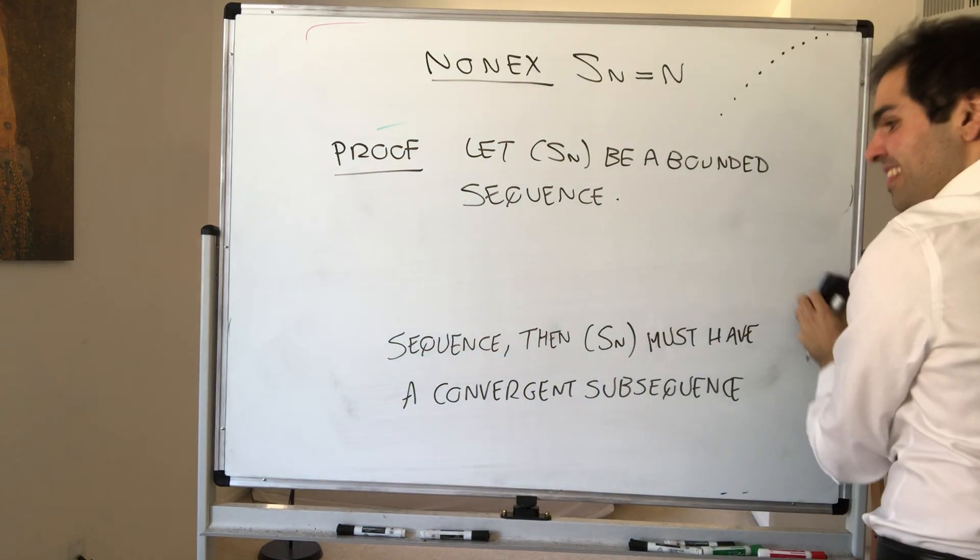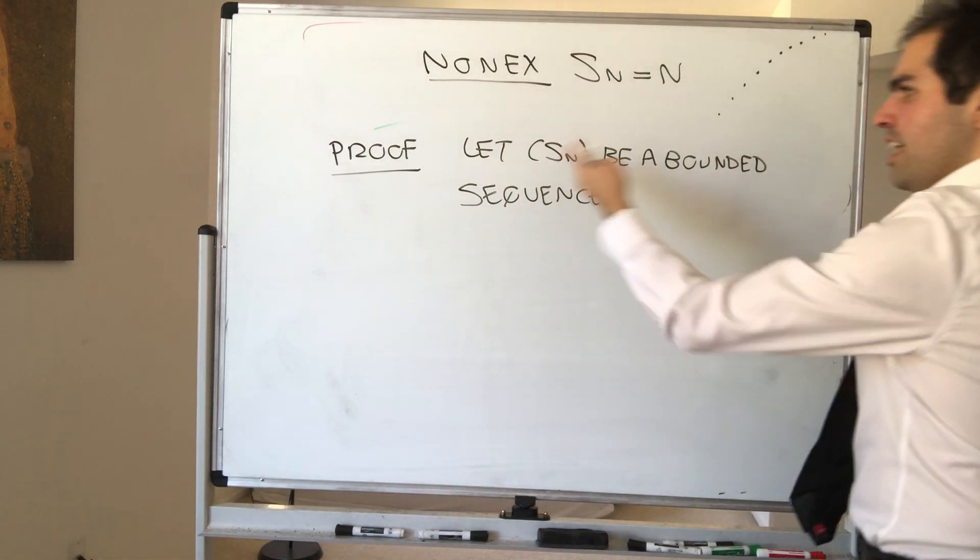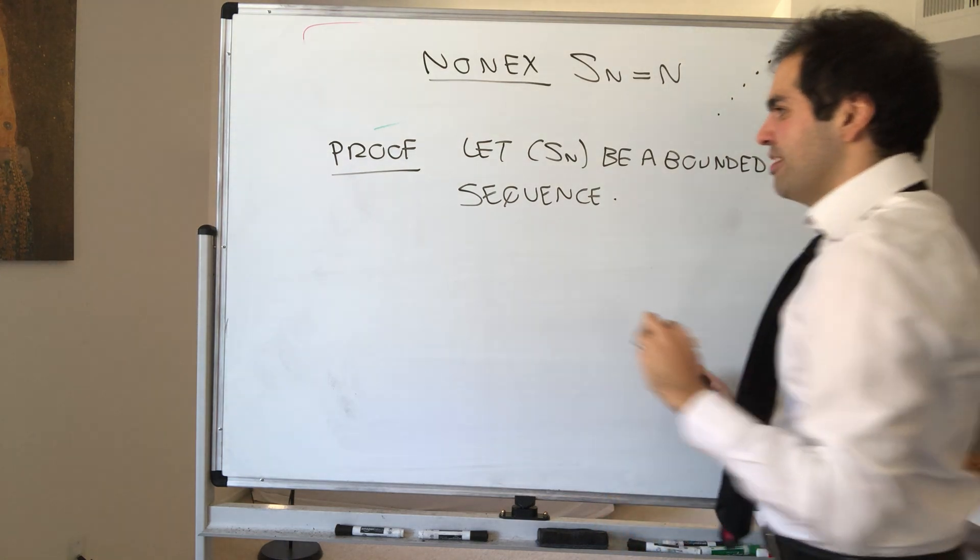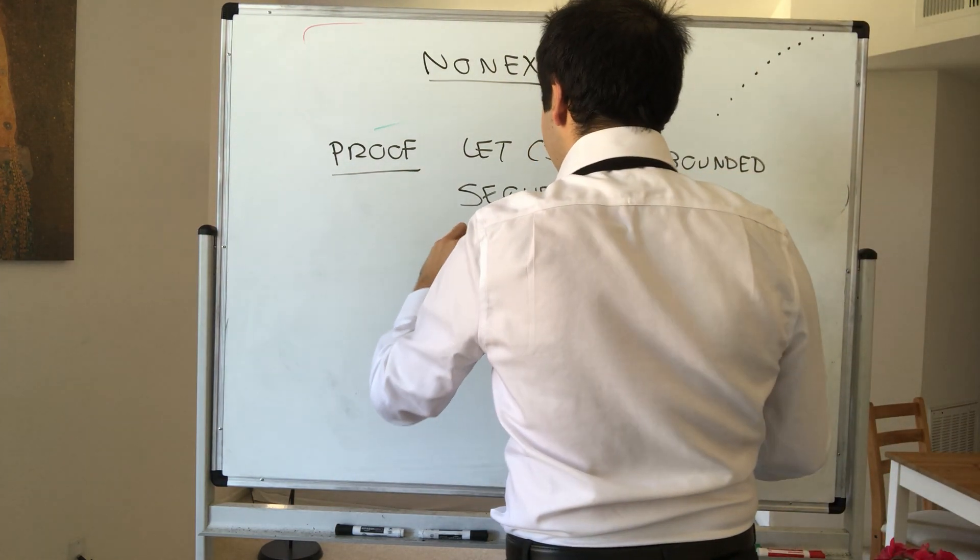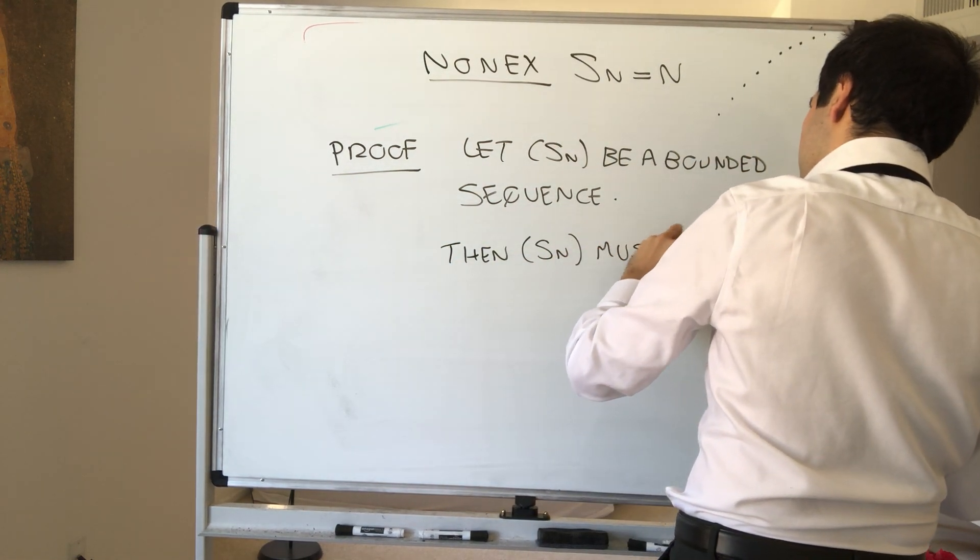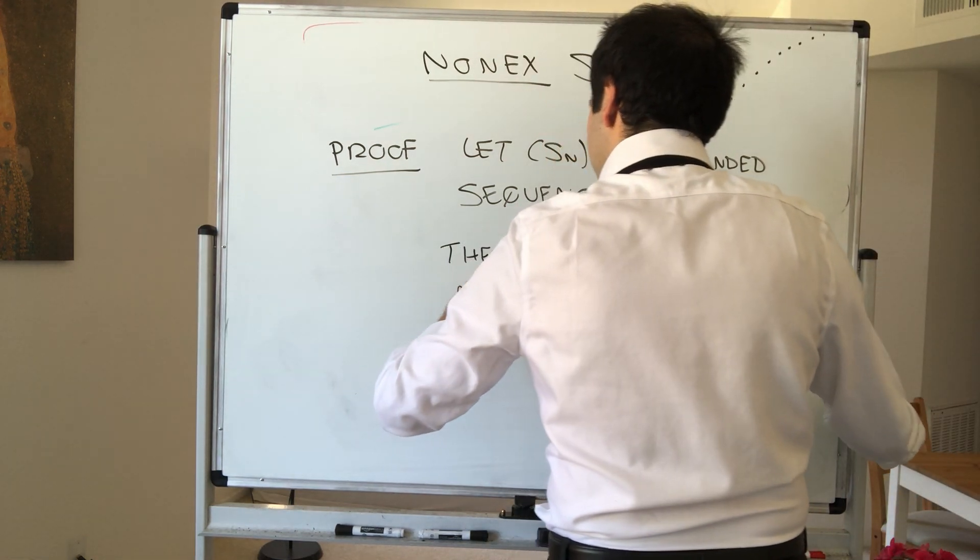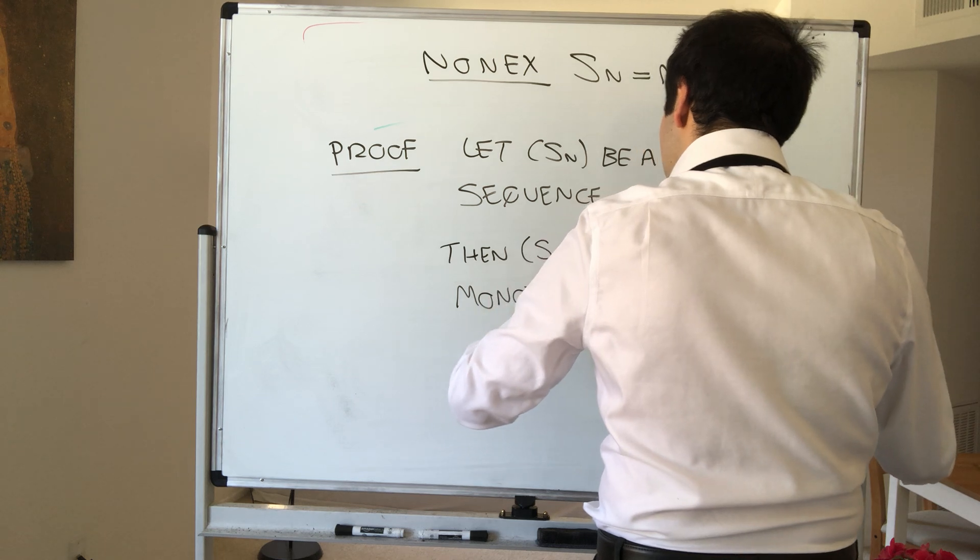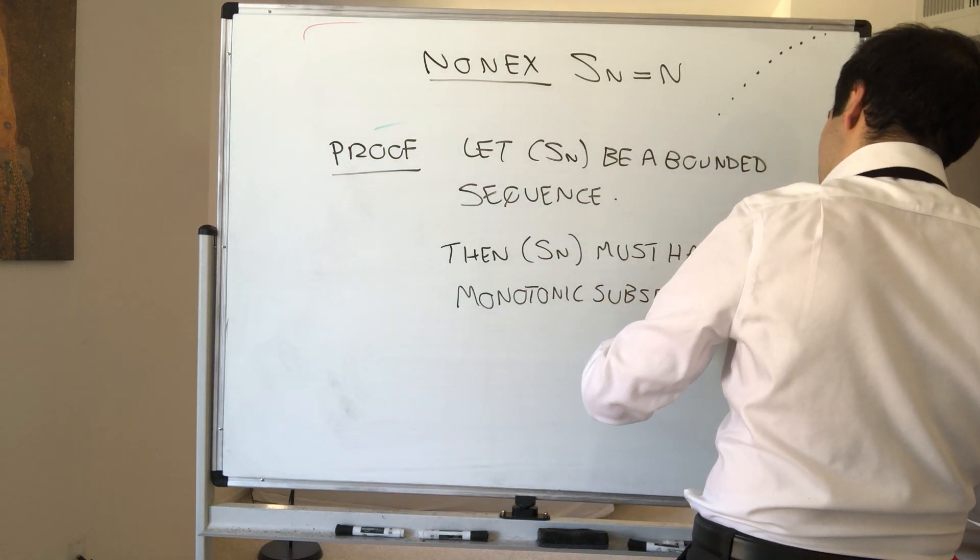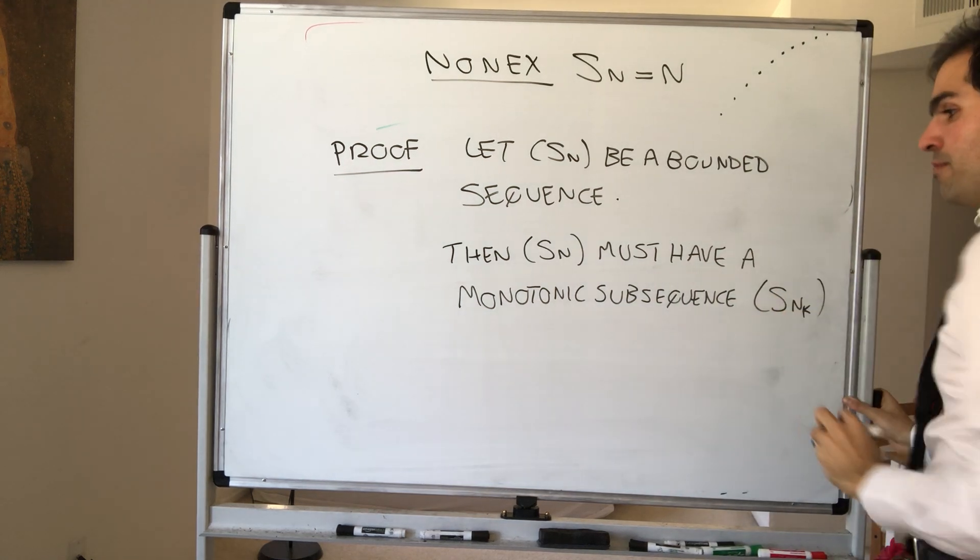Then, the nice thing is, last time, so in a previous video, we've shown that if Sn is bounded, it must have a monotonic subsequence. Then Sn must have a monotonic subsequence, Snk.